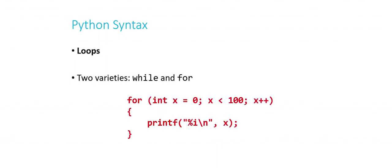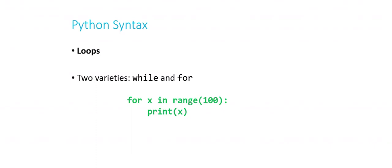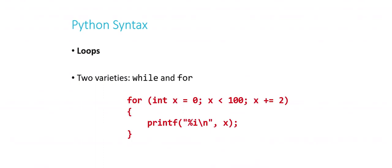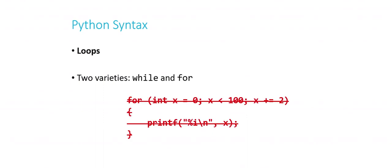For loops in Python look like: 'for x in range(100): print(x)'. The range function gives a list of numbers from 0 up to but not including 100, so this prints 0 through 99. If you want to count by twos, you can add extra parameters to range: 'for x in range(0, 100, 2)' — specifying start, end, and step. This generates 0, 2, 4, 6, 8, all the way up to 98.